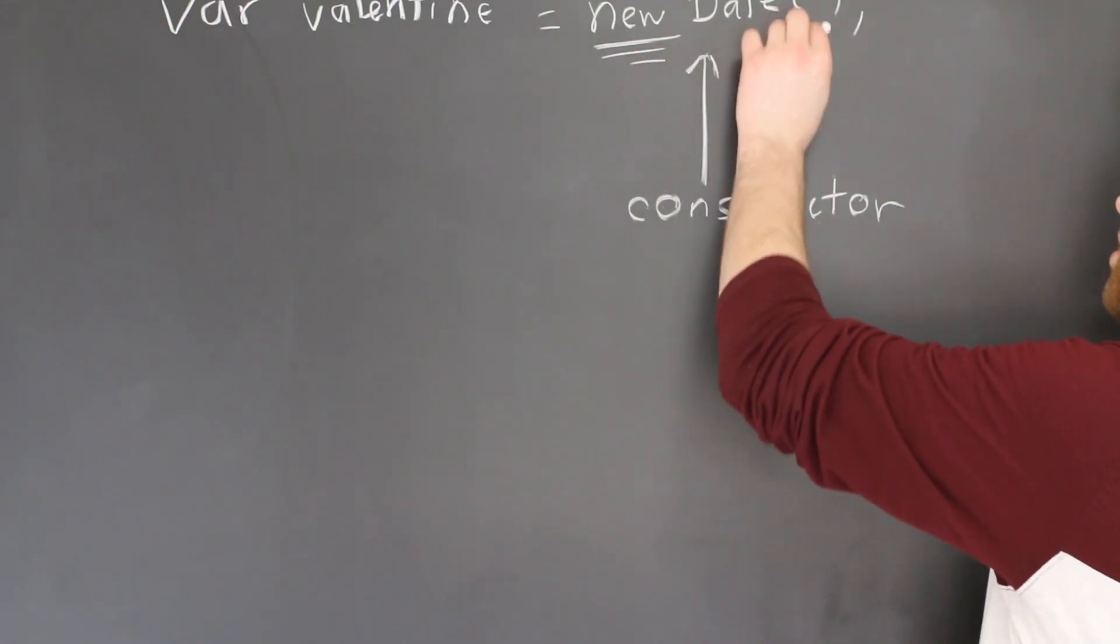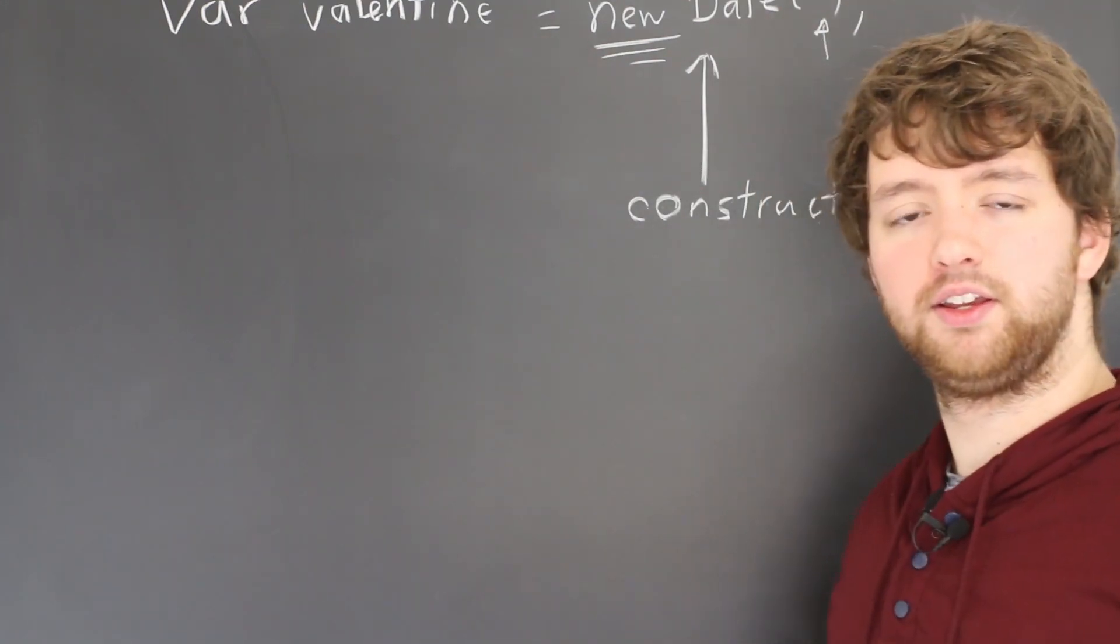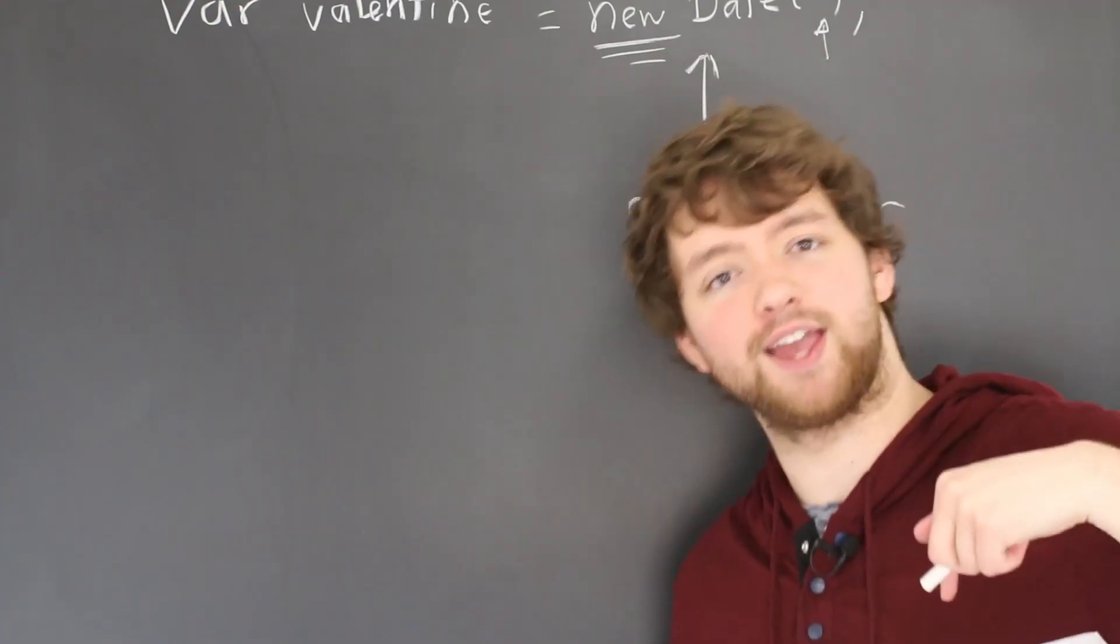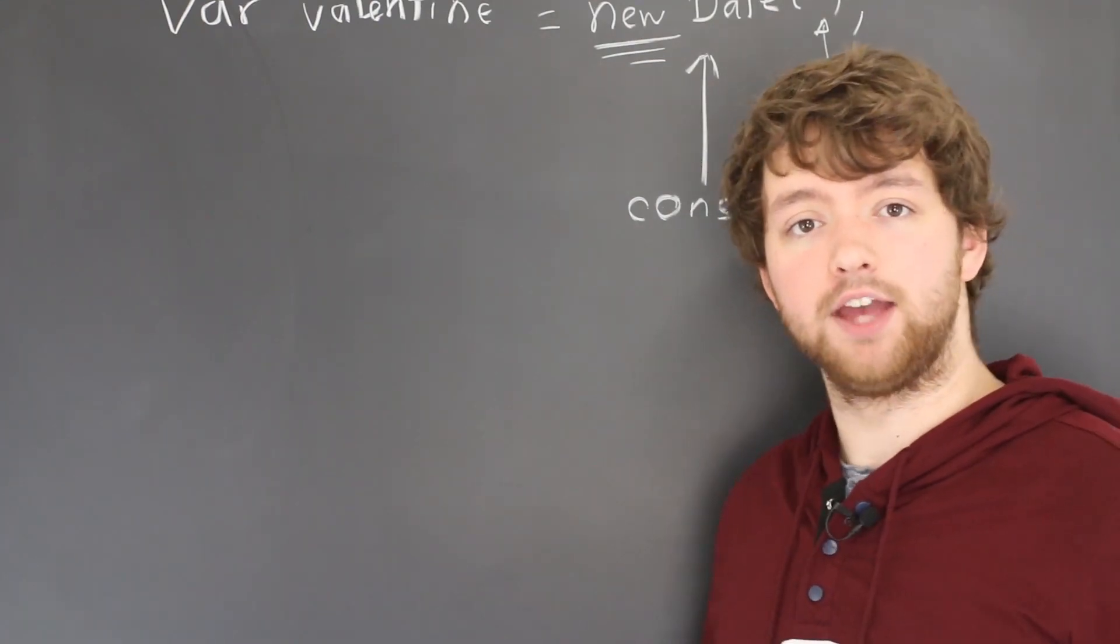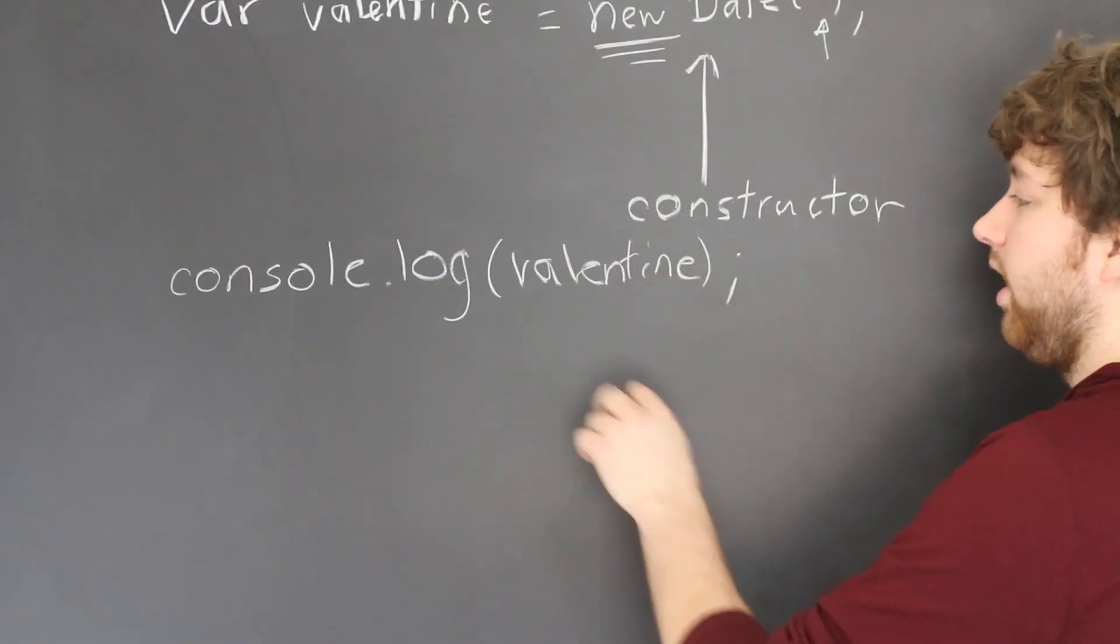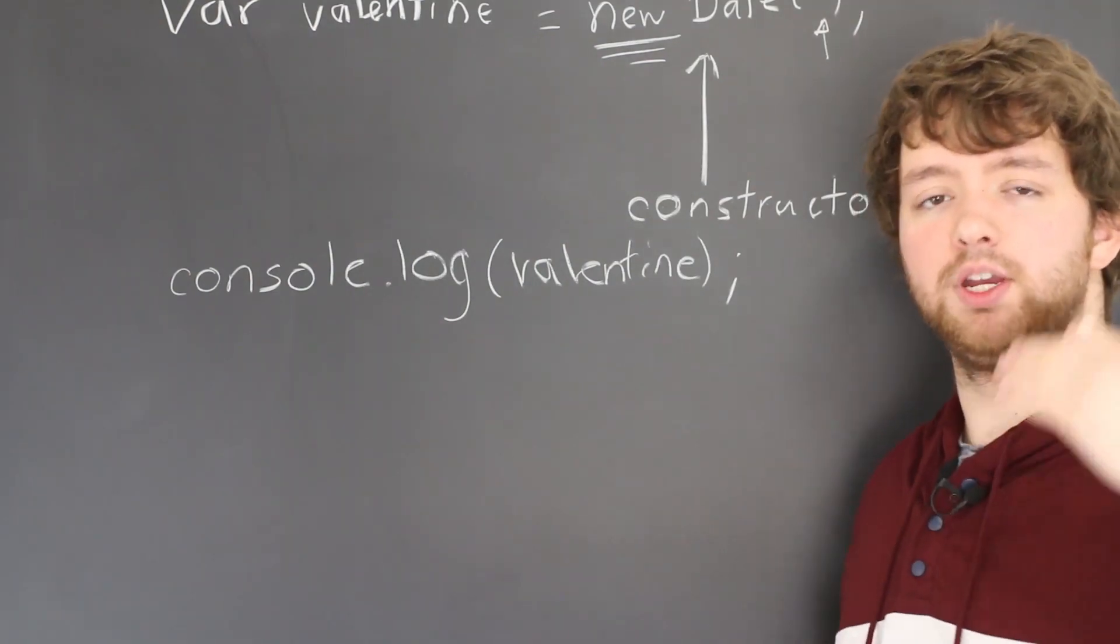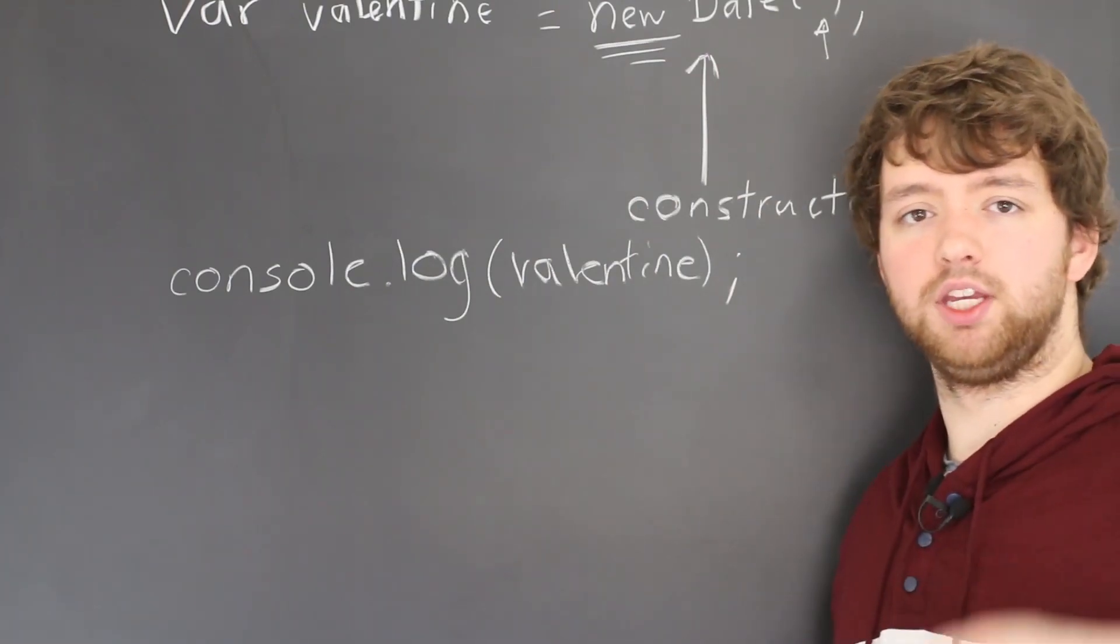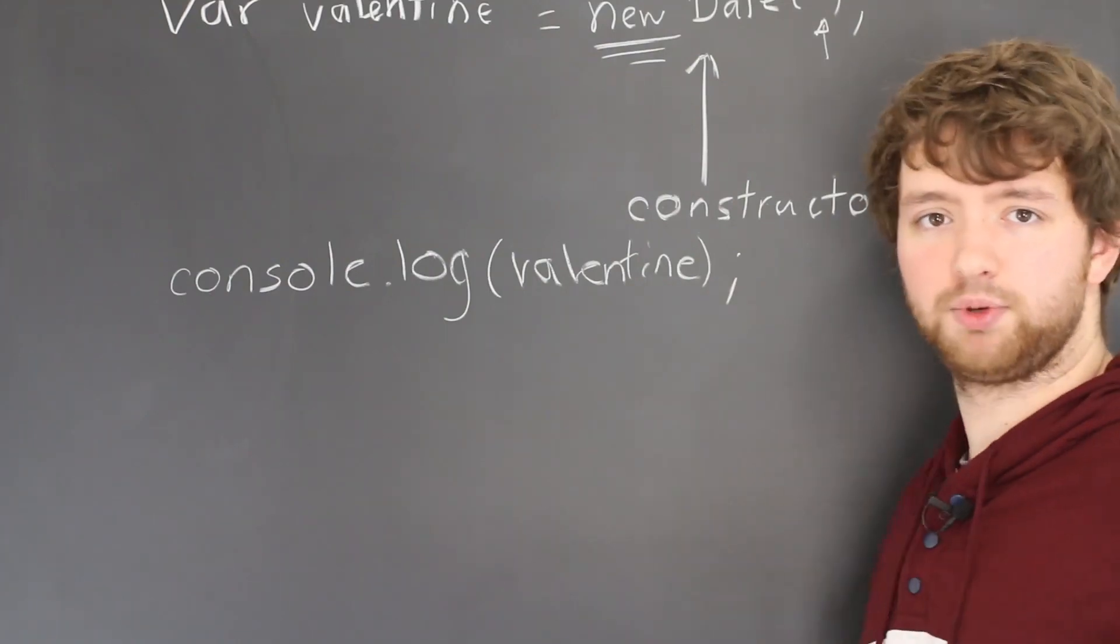So whenever we call this constructor and don't pass anything in here, it's going to default to right now. And by right now, I mean whatever time you're watching this, not the time that I'm saying this because that wouldn't be right now, that'd be in the past. So if you want to see that, you can log this date to the console, and then you just throw the variable name there. And when you do a refresh on the page, every time you refresh, that date is going to update. Because every time you refresh, it gets a new date, and that time is going to continually be the present. So if you want to see that change, go into the console and do that. It's pretty cool.